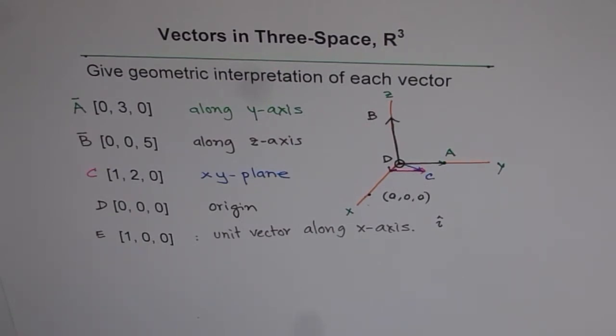So I think you get geometric interpretation of a vector. Next time when you see its ordered triple, I hope that helps. Thank you.